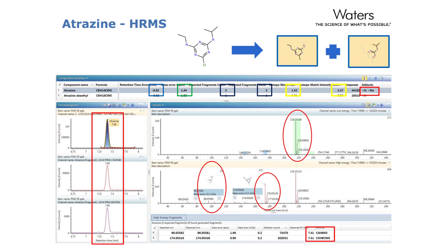The instrument operates in MSE mode, which allows the collection of precursor and fragment ion information in a single analysis. Information from accurate mass measurements of precursor and fragment ions, isotope patterns, and the presence of adducts all help improve confidence of peak assignments.